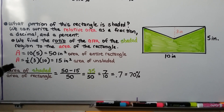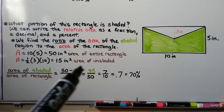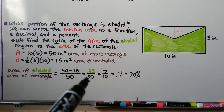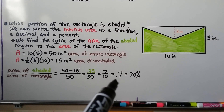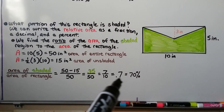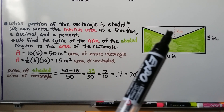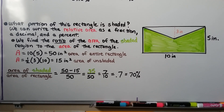We write the area of the shaded over the area of the rectangle. We subtract the unshaded area, 15, from the entire area, 50. That gives us 35 over 50. We can reduce this to 7 tenths, which as a decimal is 0.7 and as a percentage is 70%. We found the area of the triangle and subtracted it from the entire area to find the shaded area.